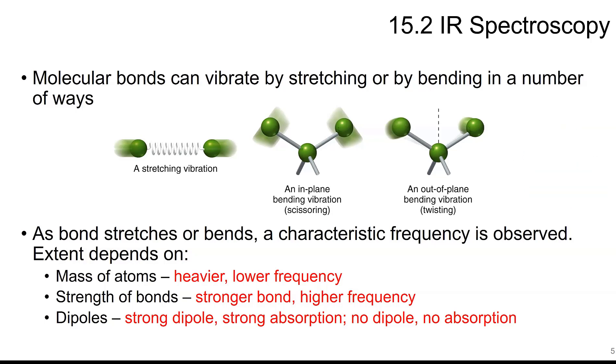So as a bond stretches or bends, there's a characteristic frequency observed, and that depends on the mass of the atom. So a heavier atom will have a lower frequency, the strength of a bond. If you have a stronger bond, that's going to give a higher frequency. And with dipoles, you have strong dipoles, strong absorption. If there's no dipole, there's not going to be any absorption.